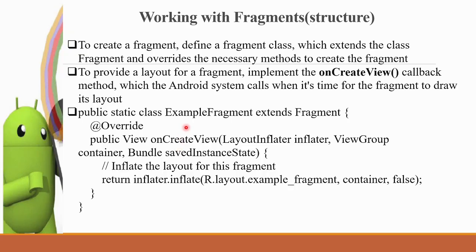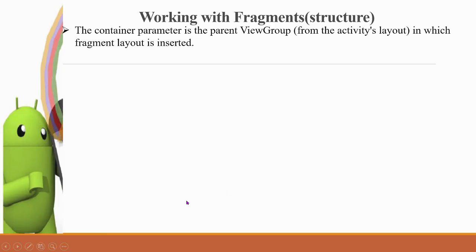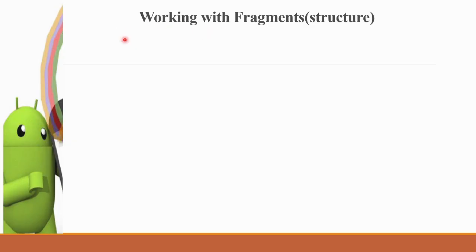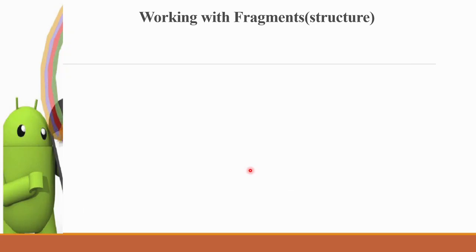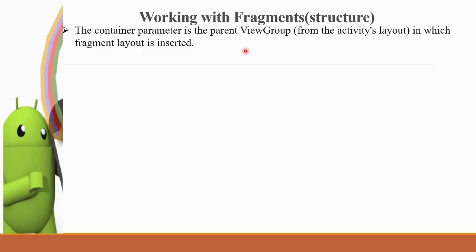This is the basic structure. The fragment class — for example, FragmentExample — extends Fragment. Then we implement onCreateView with three parameters: LayoutInflater, ViewGroup, and Bundle. We call inflater.inflate to inflate the layout. The container parameter is the parent ViewGroup. We activate the layout, such as a ConstraintLayout, in which the fragment layout is inserted. The fragment's parent layout is in the container.